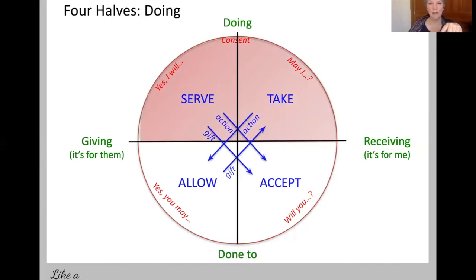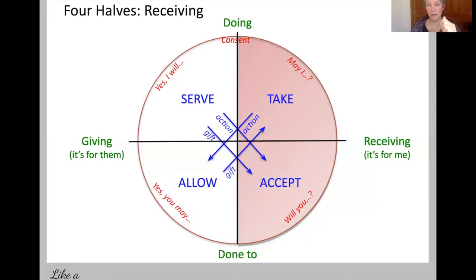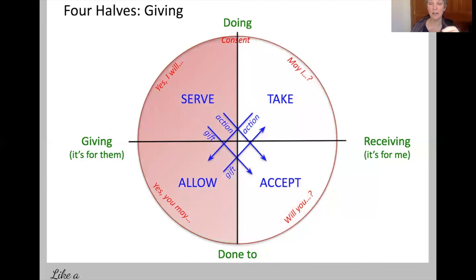So that is the four quadrants. In the doing half, there are two ways to do: you can do to benefit the other person, in which you're serving, or you can do for your own benefit, in which you're taking — and it's important that we have access to both of those in our lives. Likewise, in the done-to half, it may be what you want, or it may be what the other person wants that you are allowing, and it's important to know the difference. In the receiving half, you can receive access to the other person — that's taking — or you can receive the gift of their touch. Both are different ways to receive, and there are two different ways to give: you can give your action, or you can give access to you. So that's the Wheel of Consent.